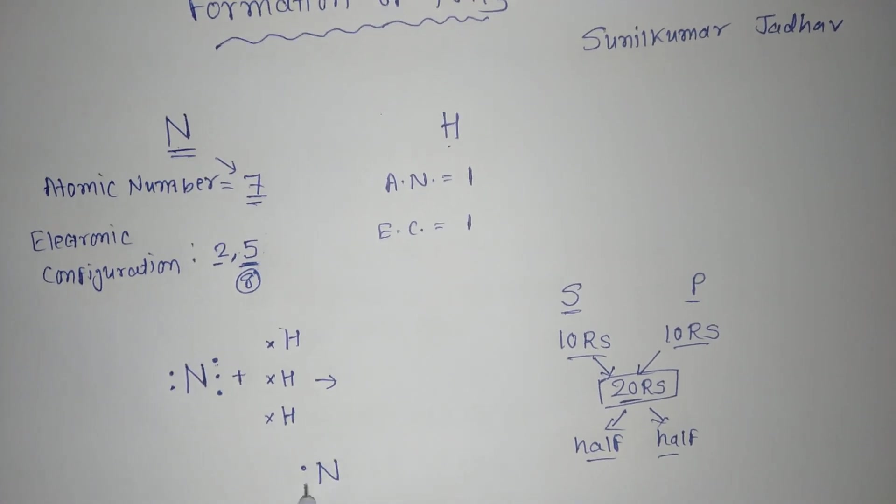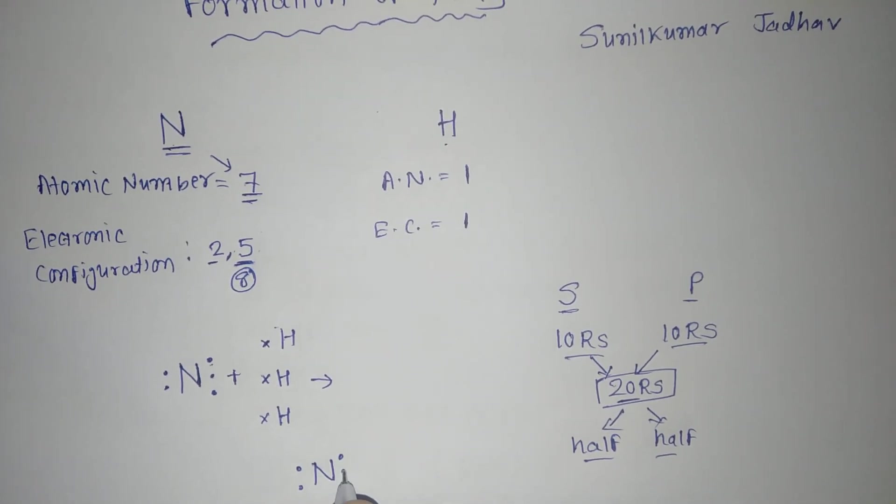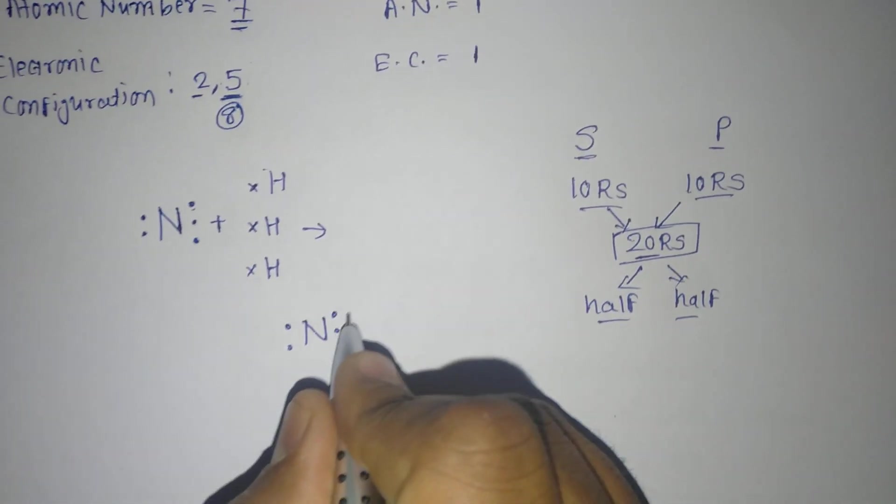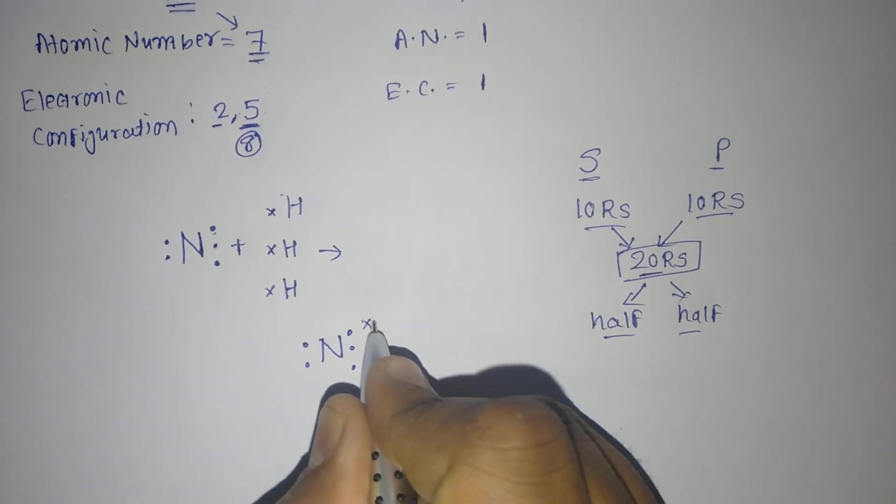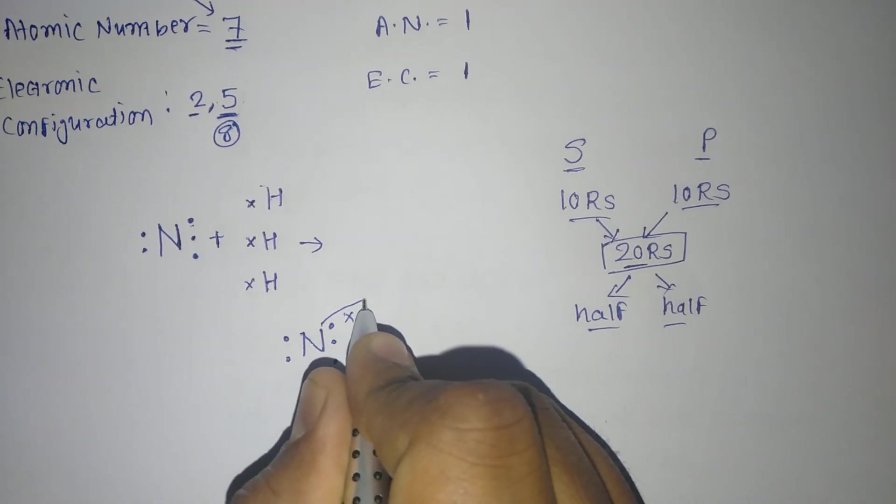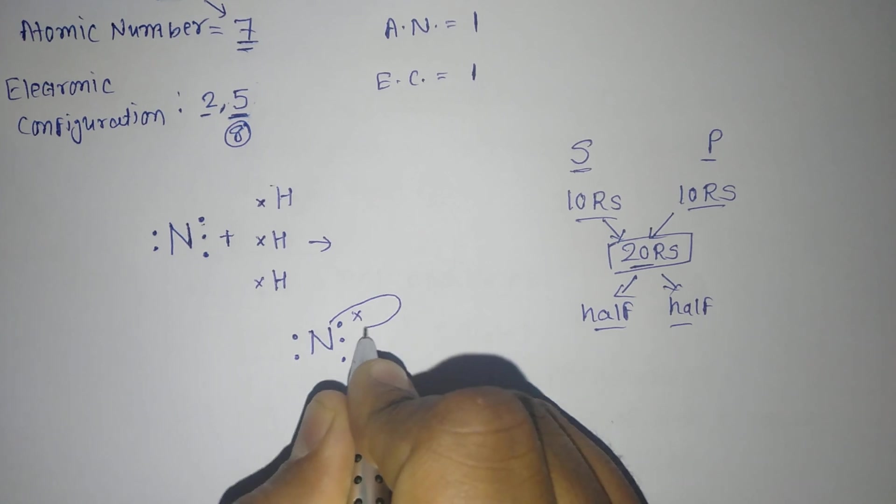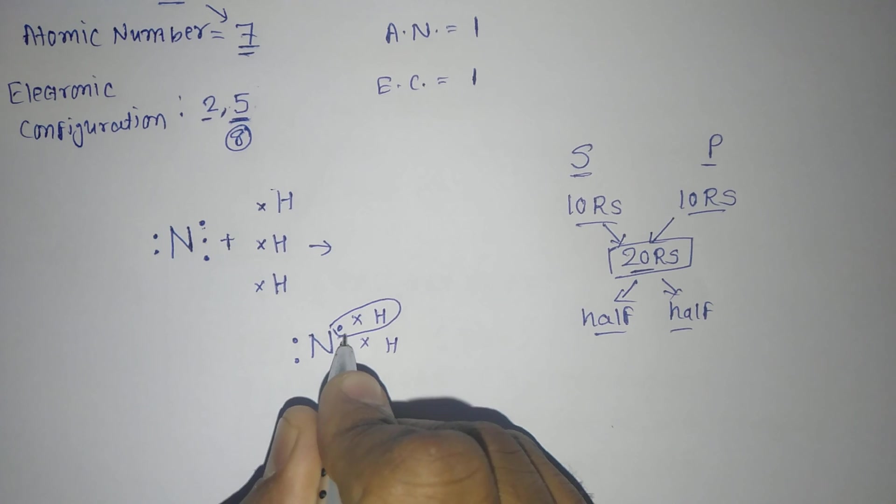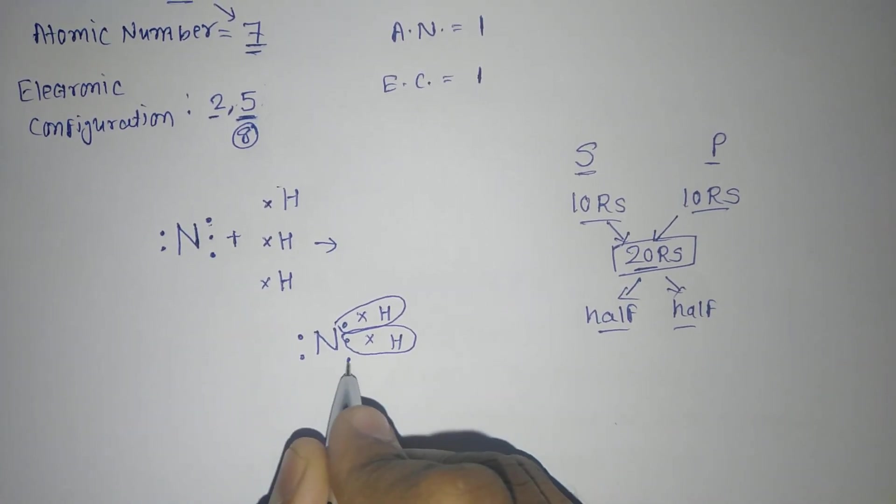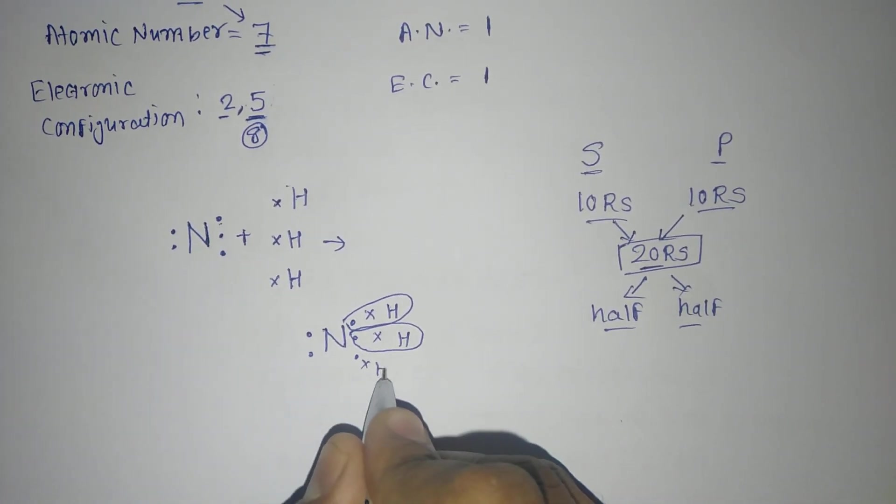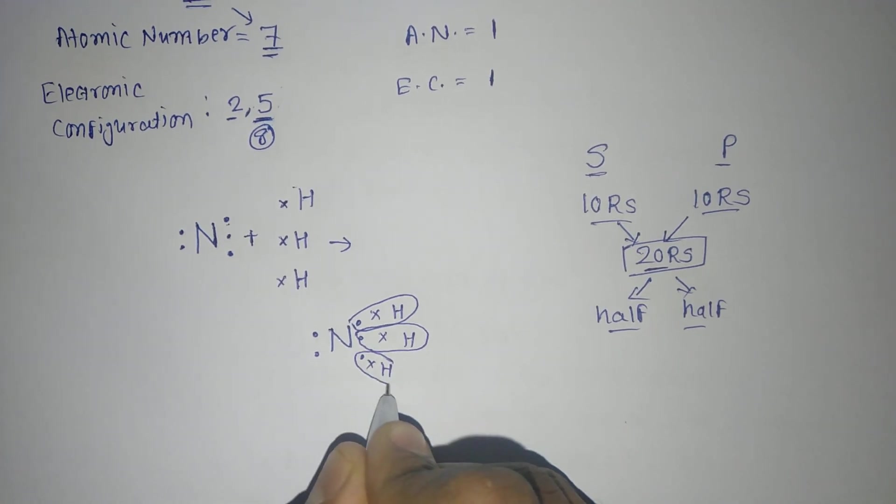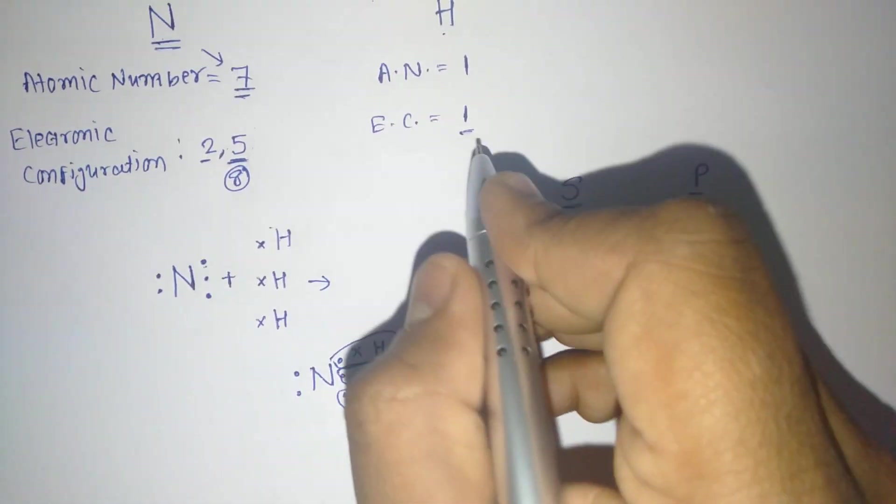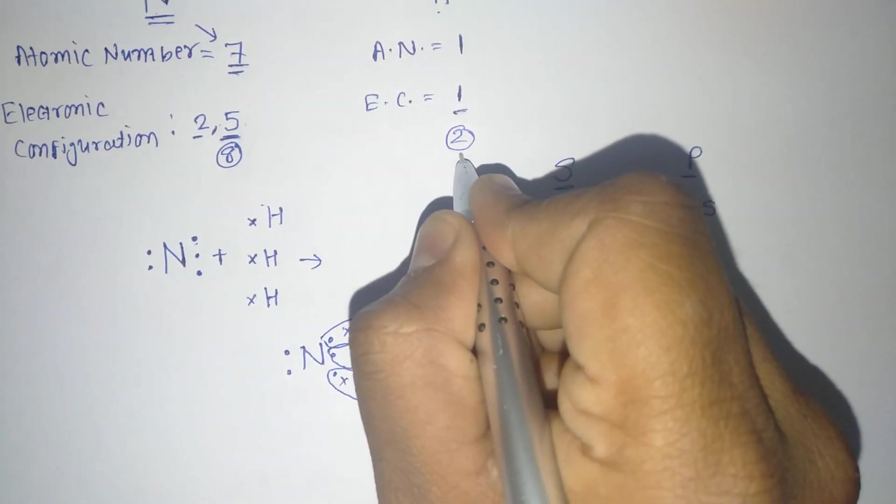Now this 1 will be taking 1 electron from the hydrogen. So hydrogen's valence will be completed like this. Again one more hydrogen will be there, so that would also be completed here. And for another hydrogen, it will form like this. You know that hydrogen has 1 electron, so it has to complete its first orbit with one more electron. It has to make it 2.